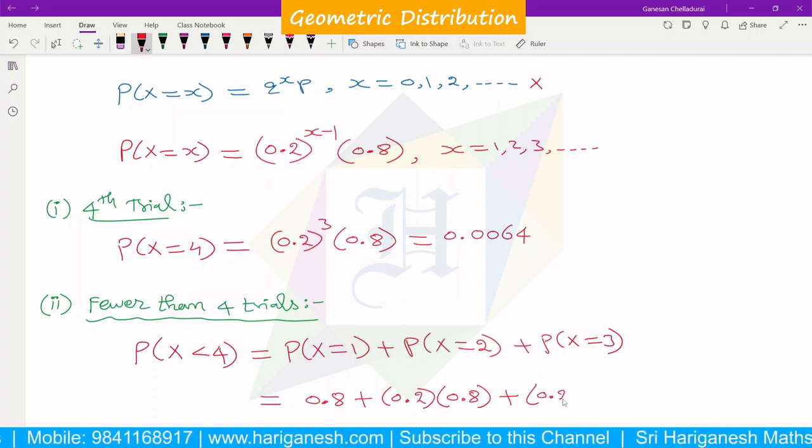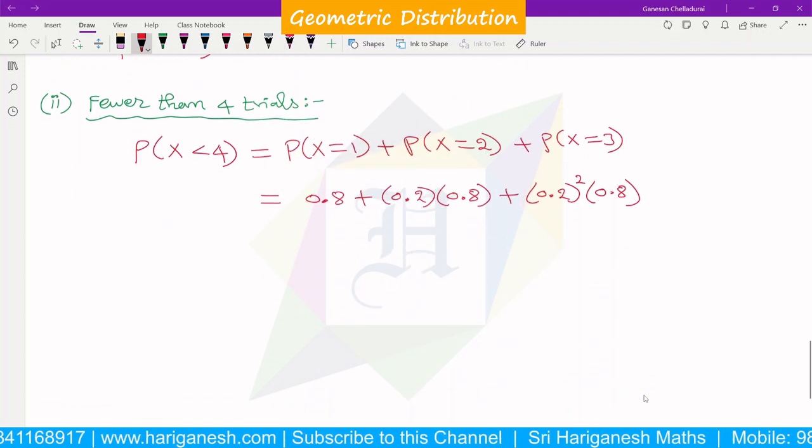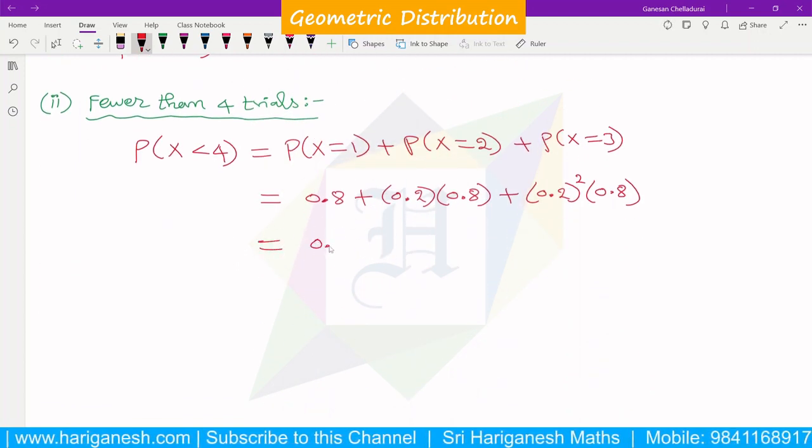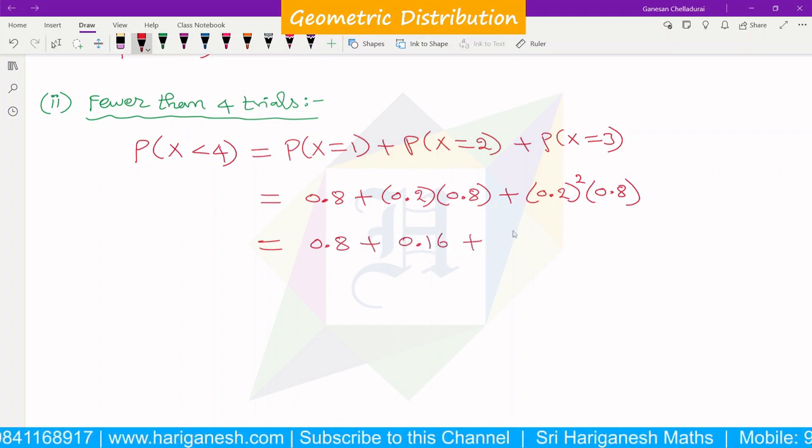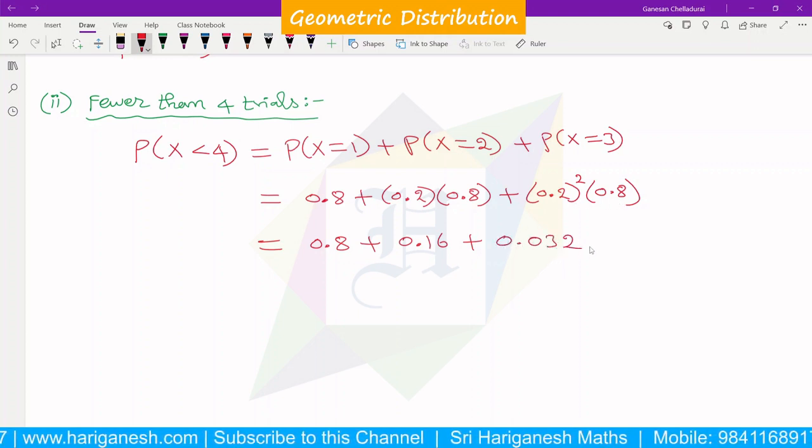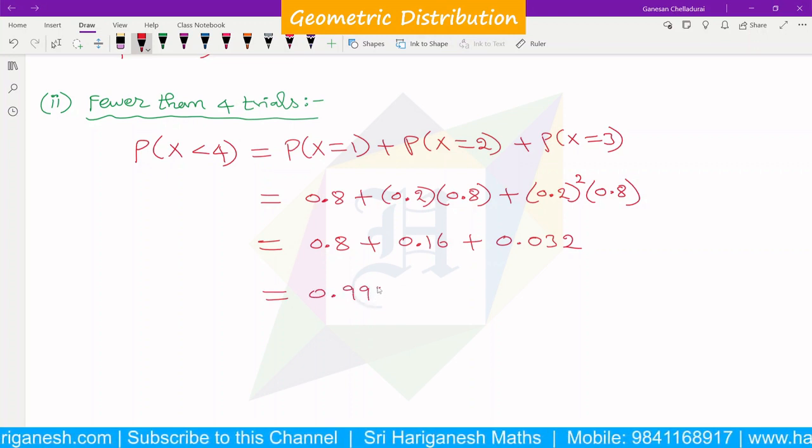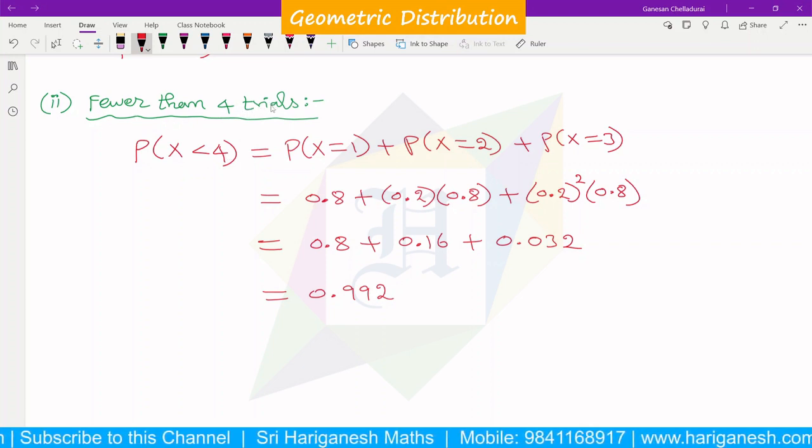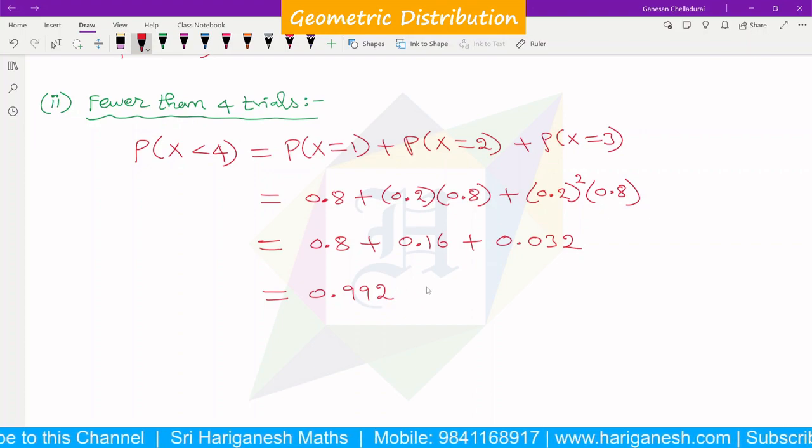If you substitute one by one in the calculator, you can add. So, this is 0.8. This multiplication gives 0.16. And this gives 0.032. So, here is P(x < 4), that is fewer than 4 trials. The test is passed with probability 0.992. So, this is the answer. God bless.